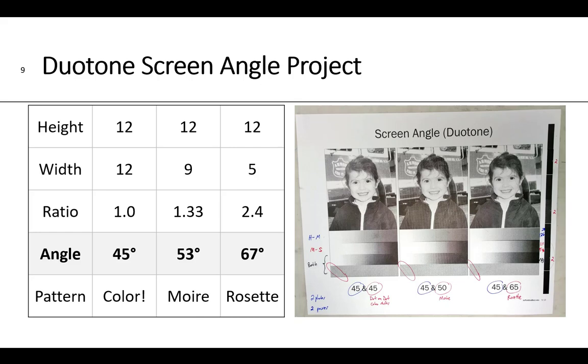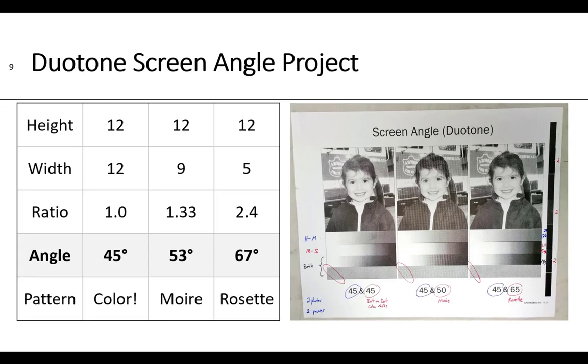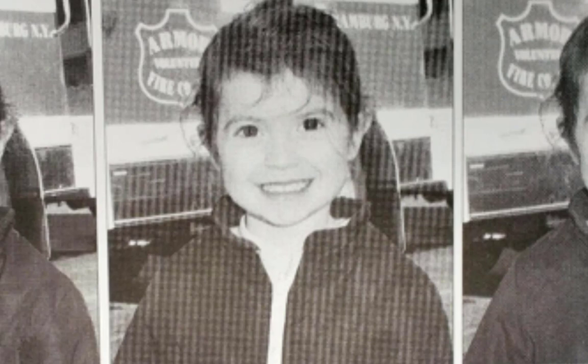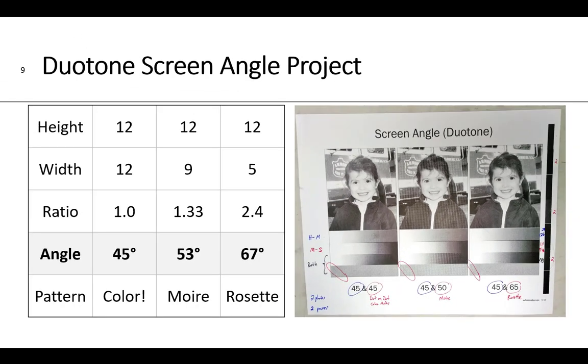Now when you use the same screen angle on a duotone it's called dot on dot printing. You don't get any patterns but what you do get is extreme color variation. So you don't want that. When you use 53 degrees for the lighter color on the duotone you get a moire, which is an unwanted objectionable interference pattern. And then when you use 67 degrees you get a rosette, which is an acceptable interference pattern. It's a moire that has been minimized, so hopefully it's not noticeable.